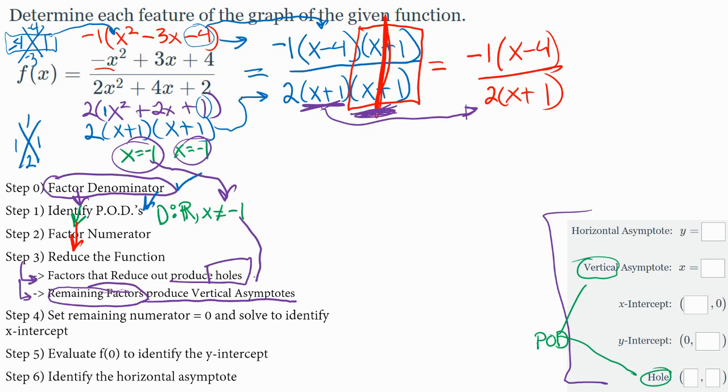x plus 1 is still in my final reduced version, which means that this negative 1 is a vertical asymptote. So this point of discontinuity is specifically vertical asymptote. There are no holes because even though it reduced out, the remaining overrides. The reduced out must be completely reduced out, which means gone. This one is not.